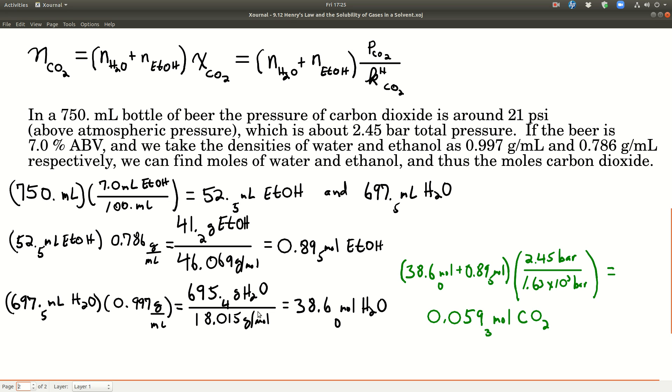To do that, the moles of carbon dioxide is equal to the moles of water and ethanol times the mole fraction of carbon dioxide in the beer. What we're going to do here is use the activity in place of the mole fraction. The activity using Henry's law standard is the pressure of carbon dioxide above the solution divided by Henry's law constant for carbon dioxide.